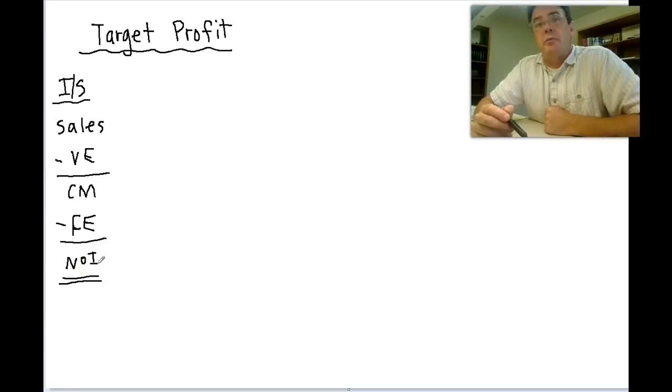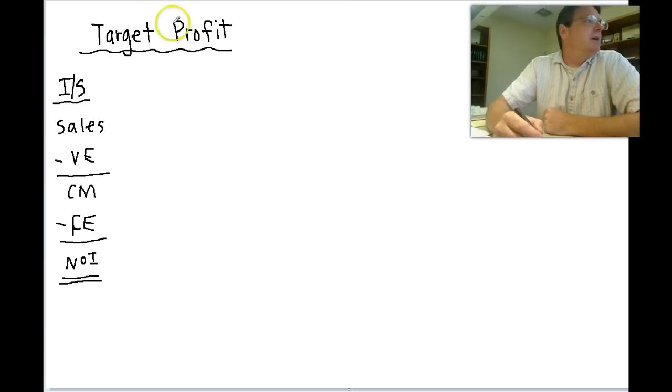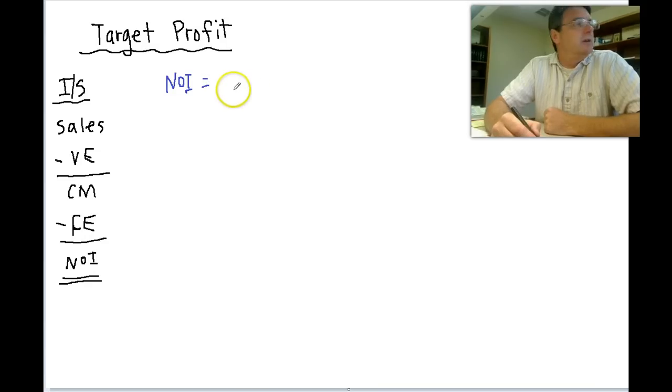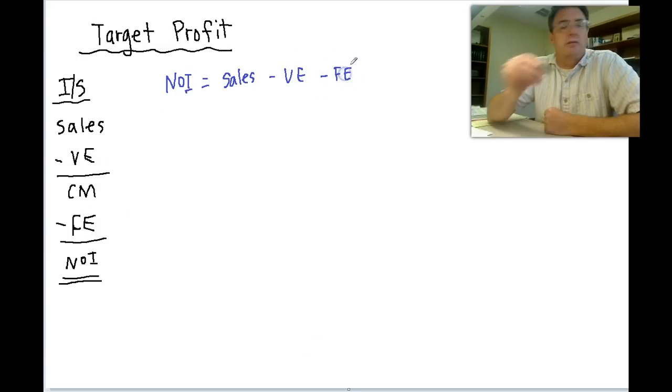So let's think of it from that perspective and build a formula. If we wanted to know what our net income was going to be, we would simply take our sales, right here, minus our variable expenses and subtract from that our fixed expenses. Right? So far so good.